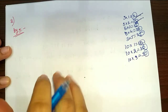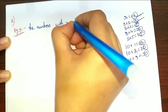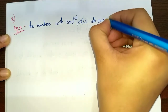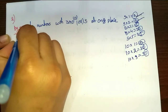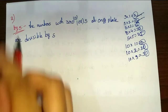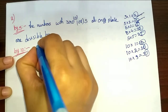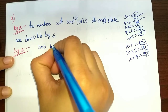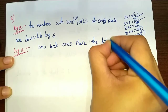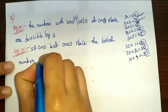So recall these steps: the numbers with 0 or 5 at the ones place are divisible by 5. Next, divisible by 10: the ones place is only 0. So a number with 0 at the ones place means the total number is divisible.